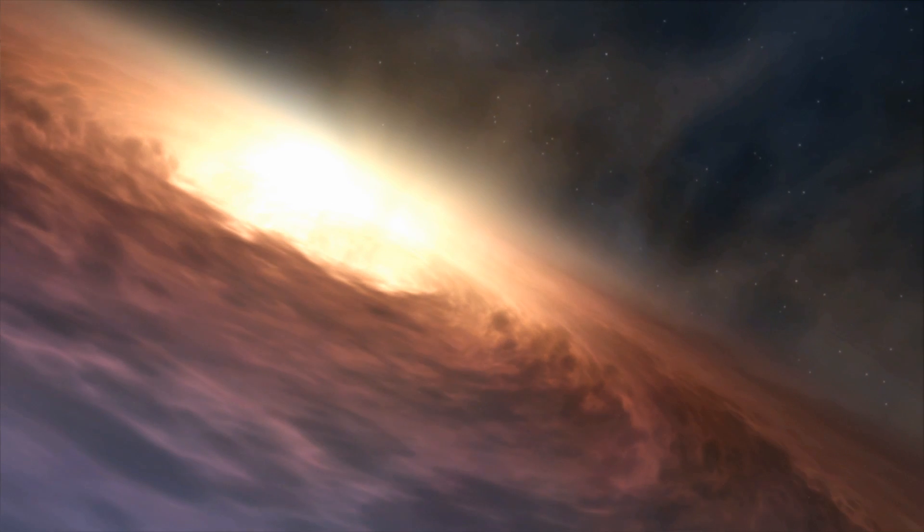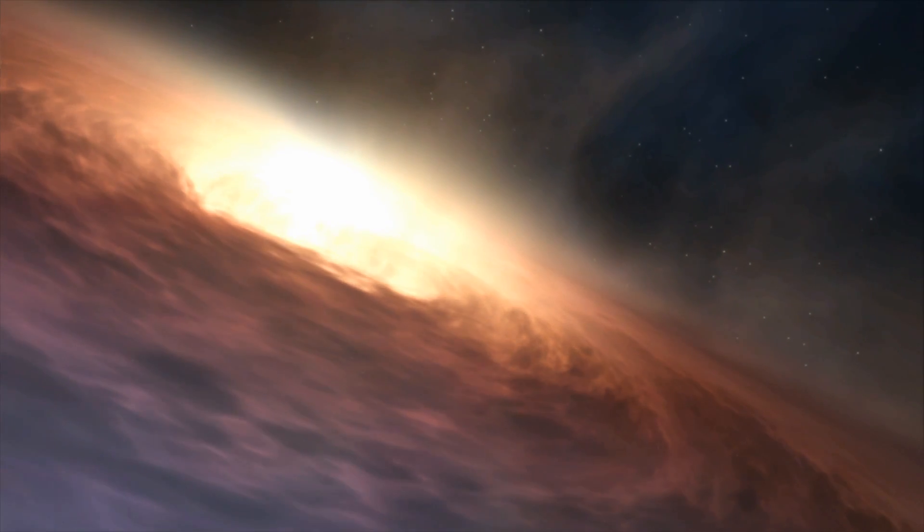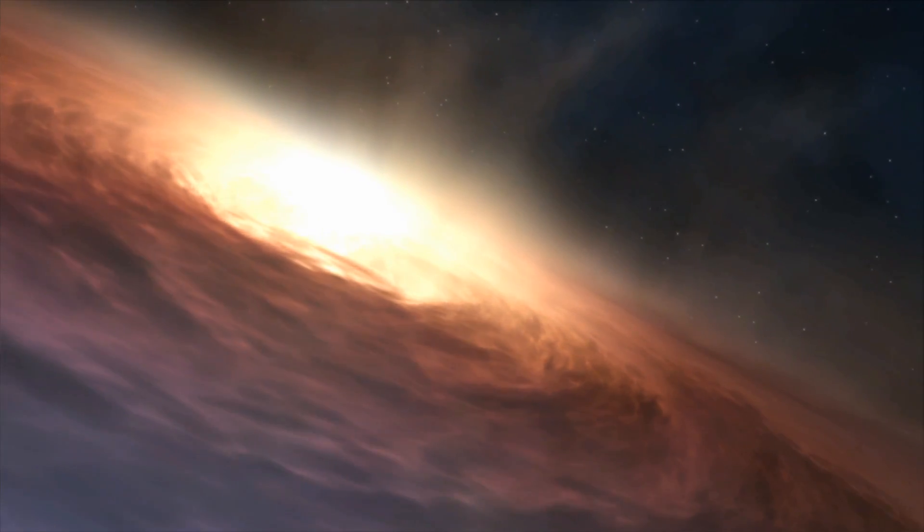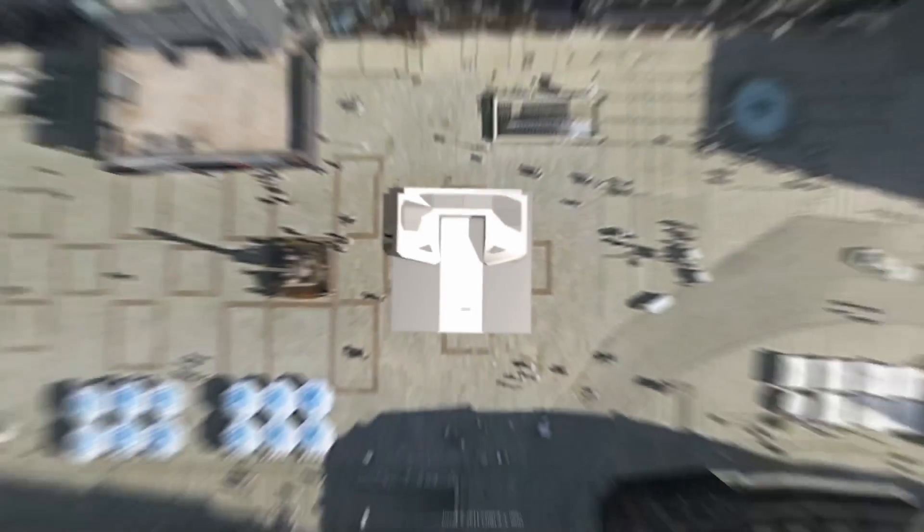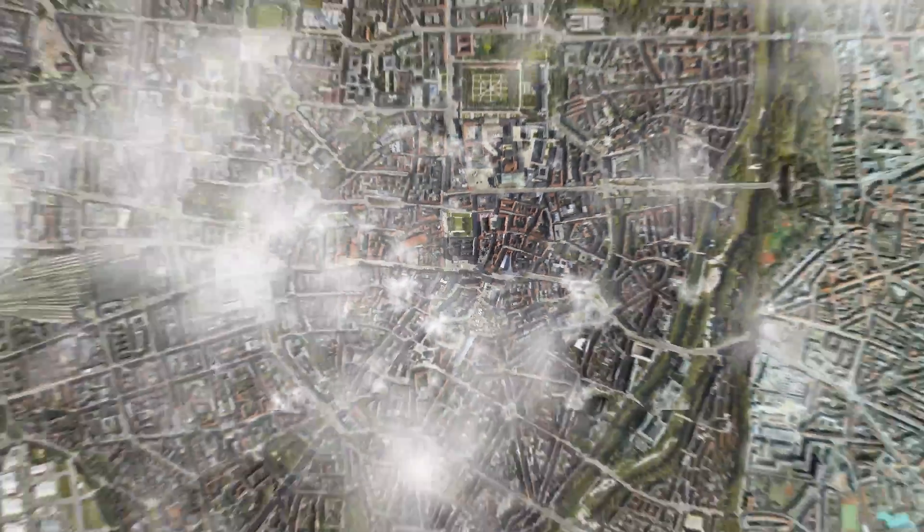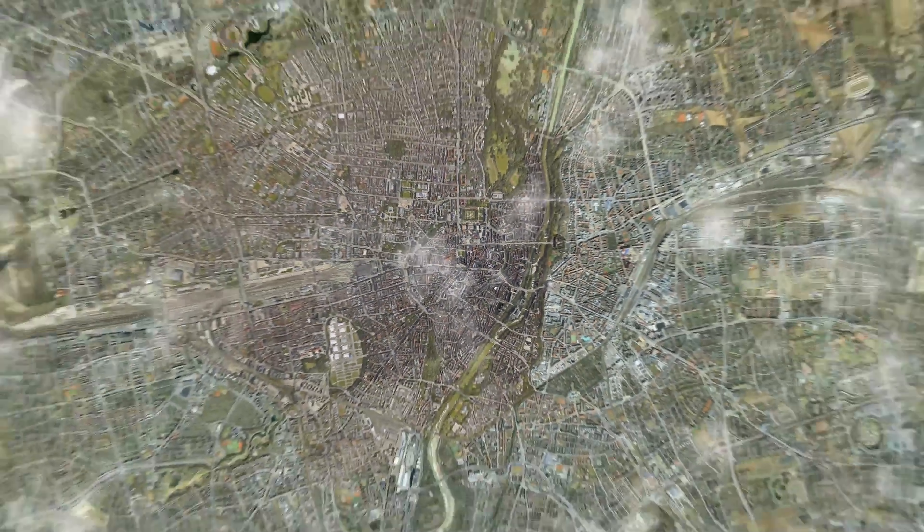A supermassive black hole is pretty big and it packs a lot of punch. But you've got to remember that compared to its host galaxy, it's actually tiny. The region of space that is most obviously and most immediately influenced by a supermassive black hole is in fact about a million times smaller than its surrounding galaxy. That's about the same size difference as between this coin and a whole city.